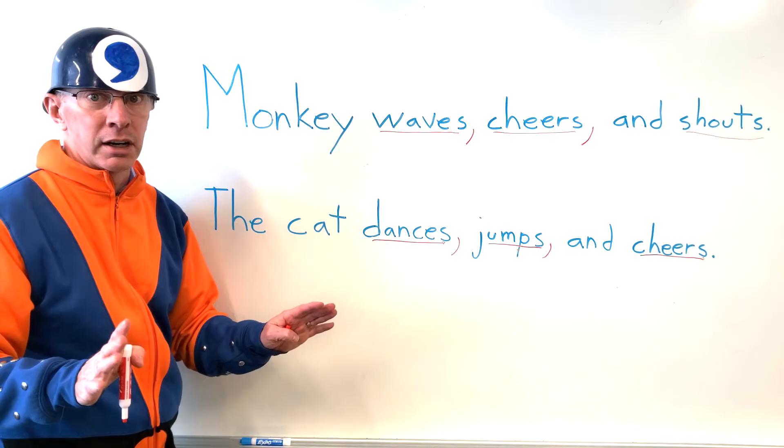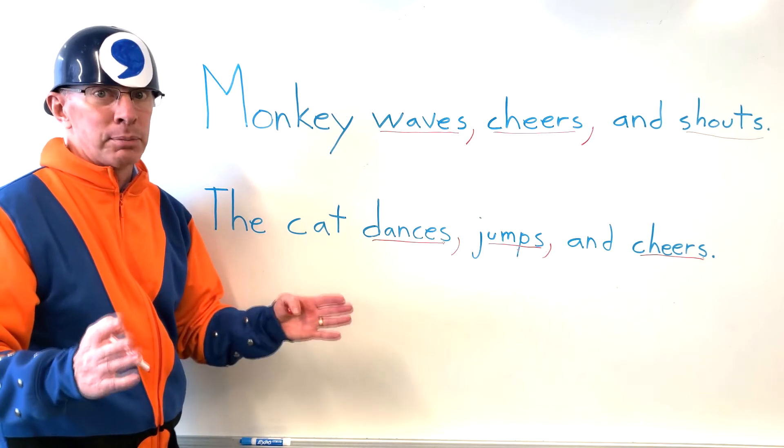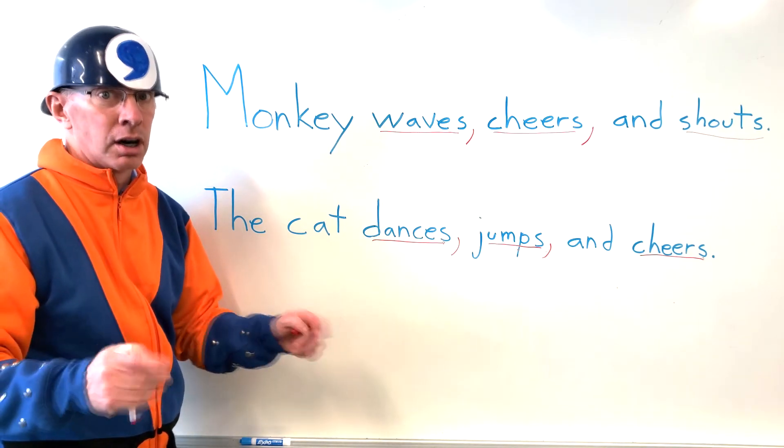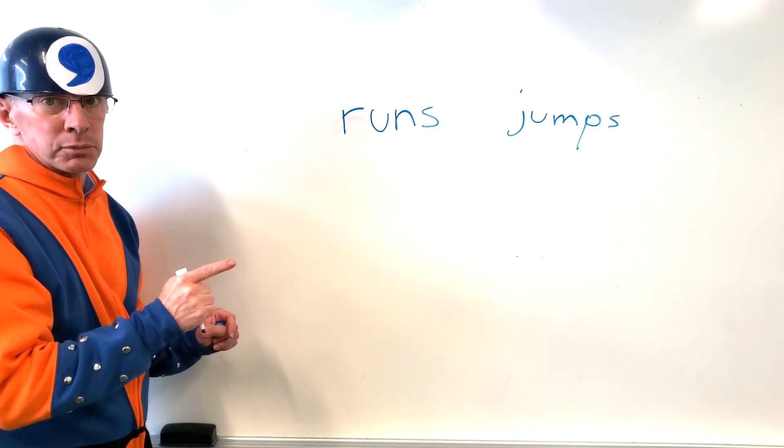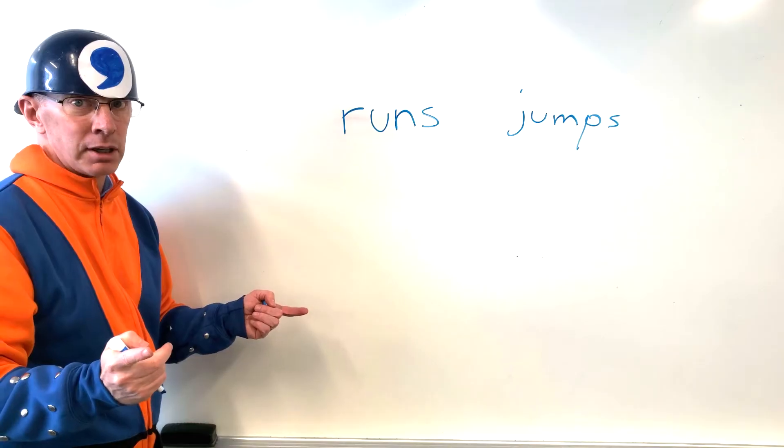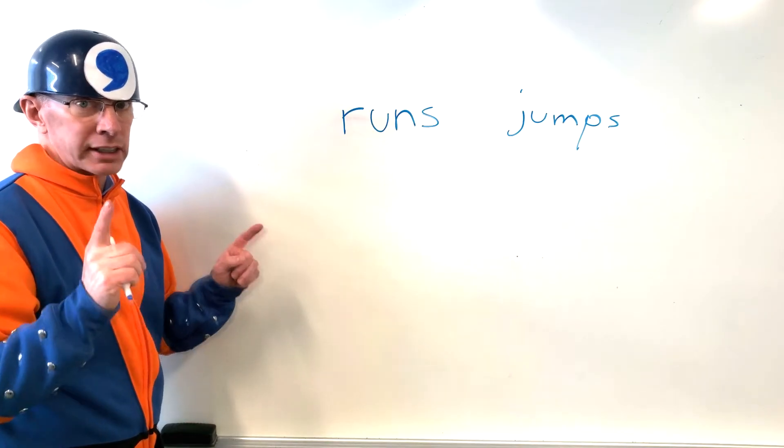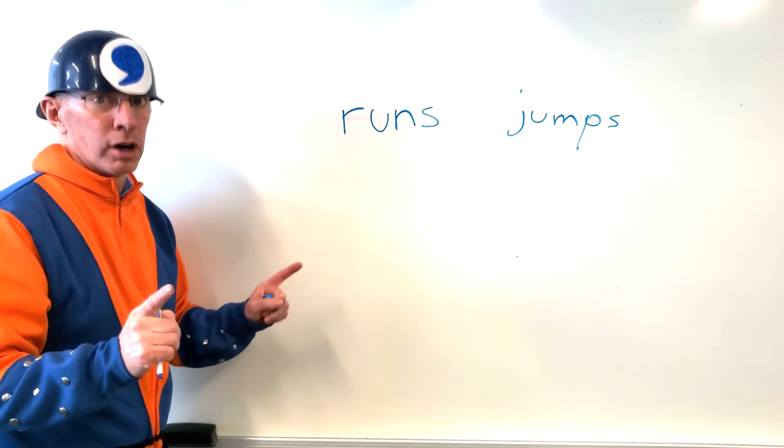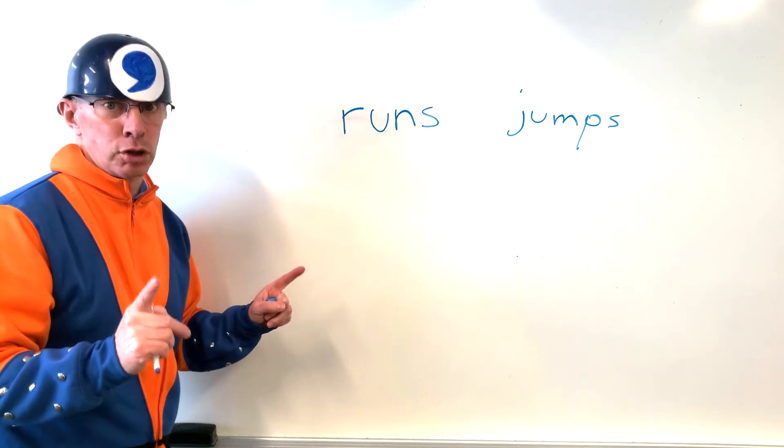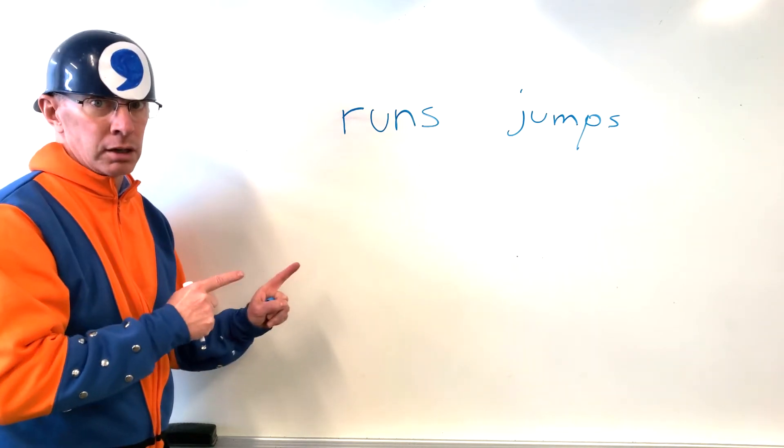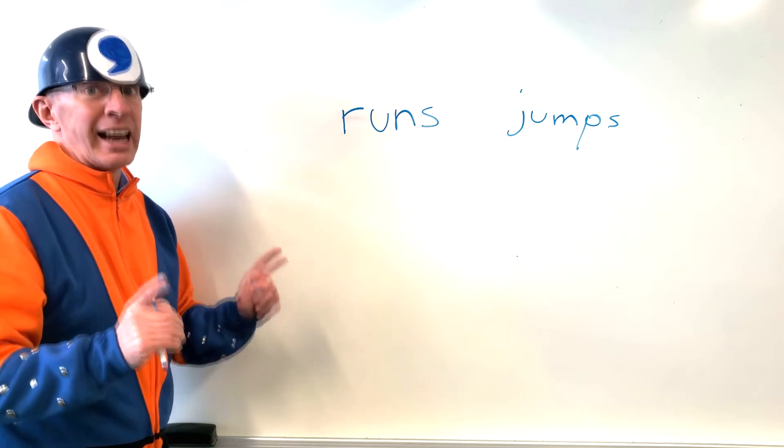Now, there's another question out there. Somebody said, hey, what happens if I just have two verbs? Alright, let's take a look at that. Alright. I got two verbs. Runs. Jumps. So if I have a sentence that uses this, do I use a comma? Remember the rule. I only use a comma if there are three or more verbs. It can be a million verbs too, but I only have two verbs here. So what do I do? I use the word and.